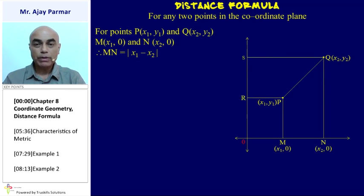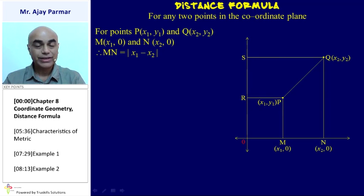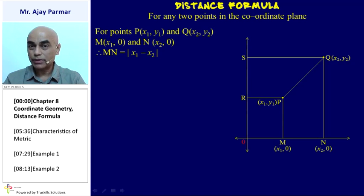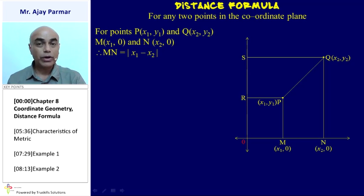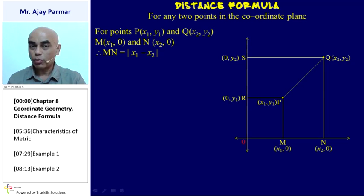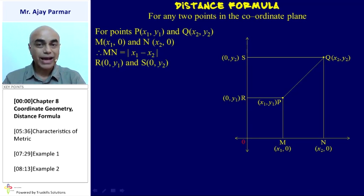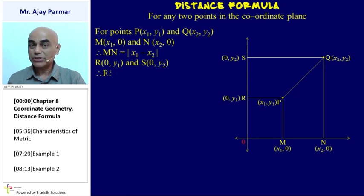We also draw perpendiculars from P and Q on the y-axis; call their feet R and S. R is the foot from P and S is the foot from Q, so R is (0, y1) and S is (0, y2), and the distance RS is |y1 − y2|.